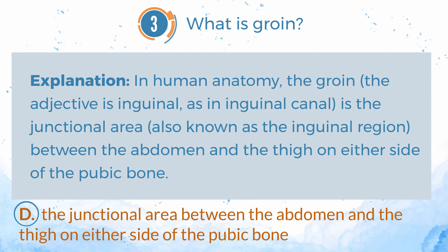Explanation. In human anatomy, the groin — the adjective is inguinal, as in inguinal canal — is the junctional area, also known as the inguinal region, between the abdomen and the thigh, on either side of the pubic bone.